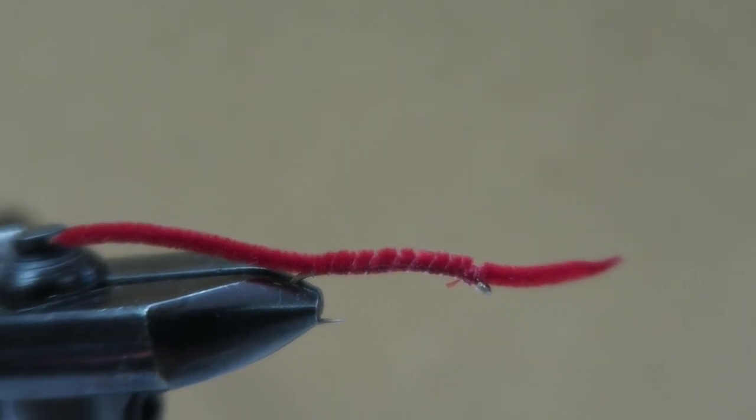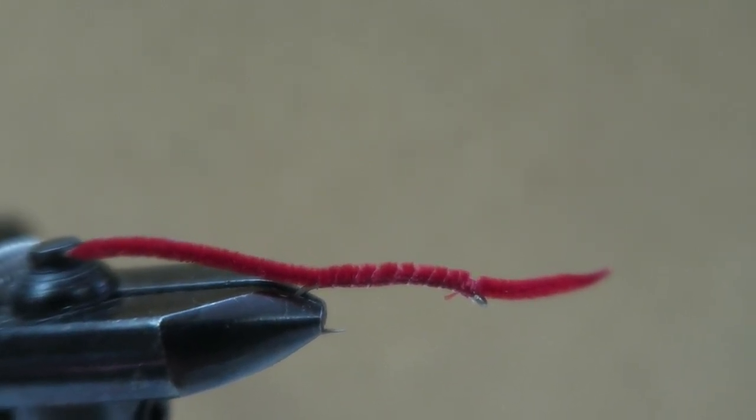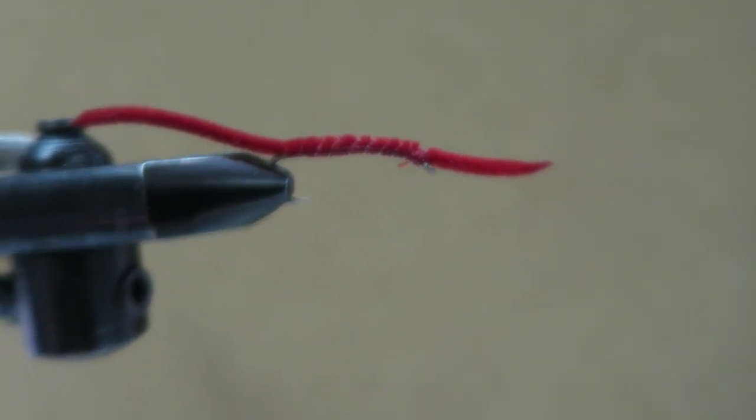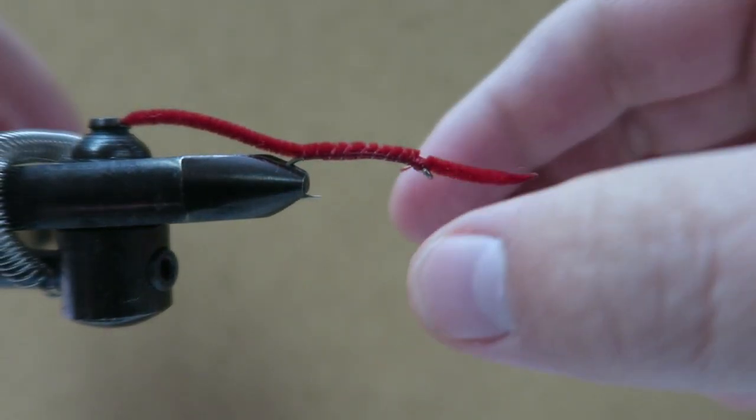Just so you can see, that's what it looks like when you wrap over the chenille and the hook. You just give it a little rib like that, give it some segments. It's just another way to do it. It's another one I tied up back a while ago.